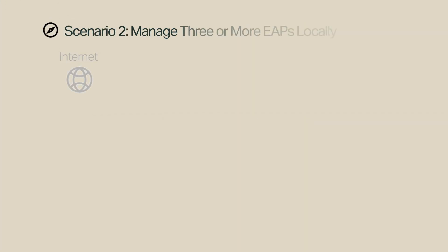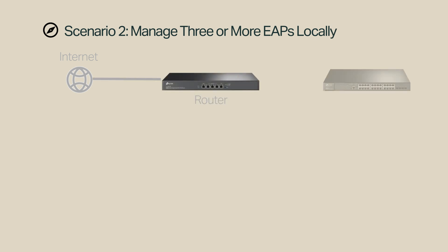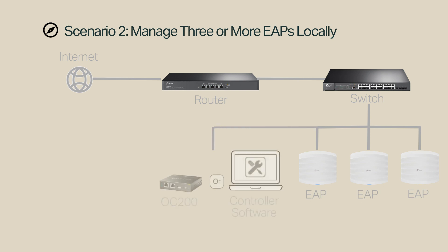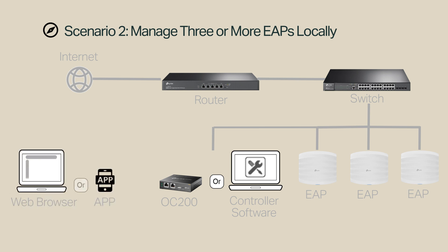To manage three or more EAPs locally, connect your router to the Internet, a switch to the router, and EAPs to the switch. Connect your controller — either an OC200 or a PC with controller software — to the local network. You can use either a web browser or the Omada app to manage the EAPs centrally in controller mode.